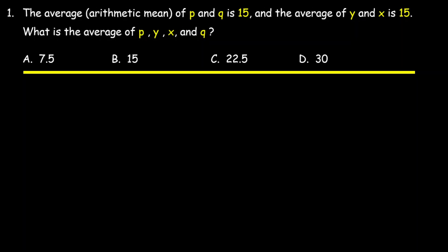The average or arithmetic mean of P and Q is 15. And the average of Y and X is 15. What is the average of P, Y, X, and Q?